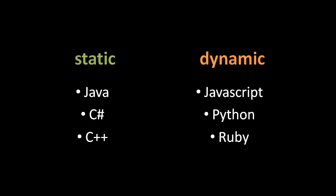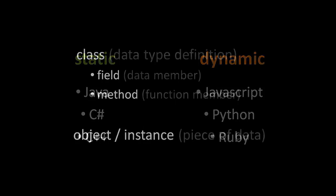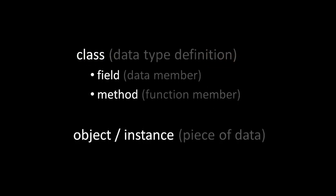What is a class? A class is simply a definition of a data type. Each class, each data type, is defined by the members which make it up. Members come in two basic kinds: fields and methods. Fields are the data members — they are the data which actually makes up the type.